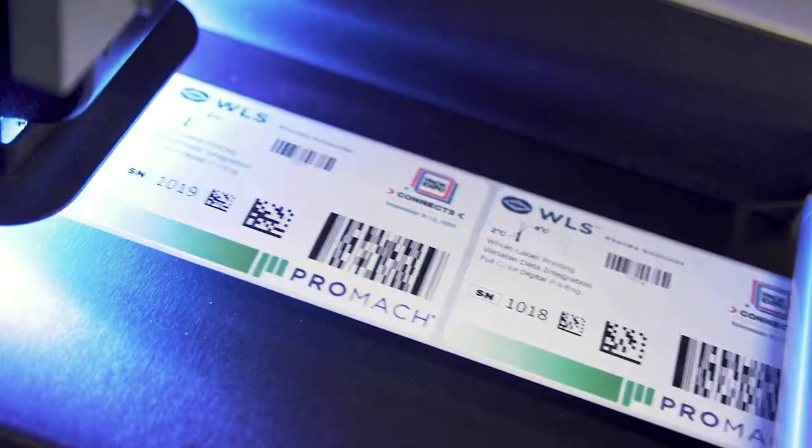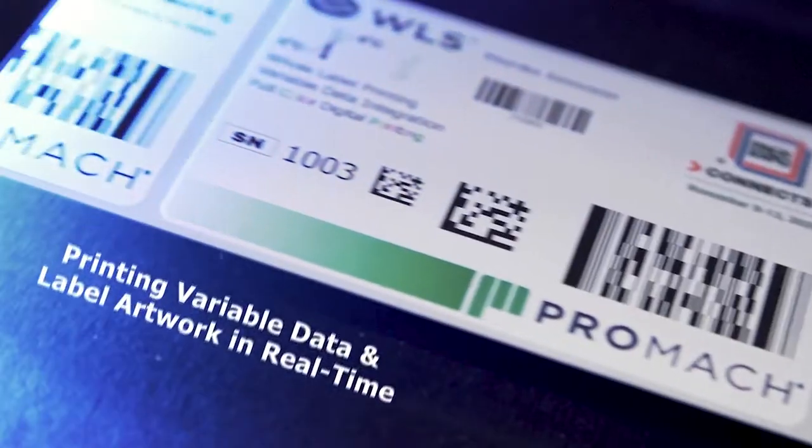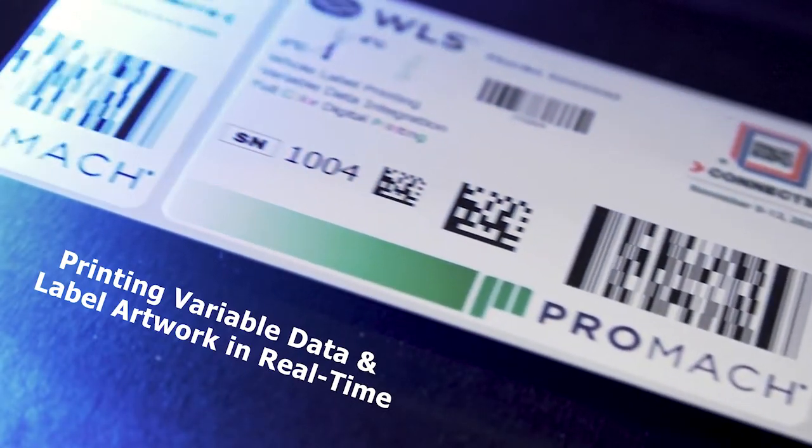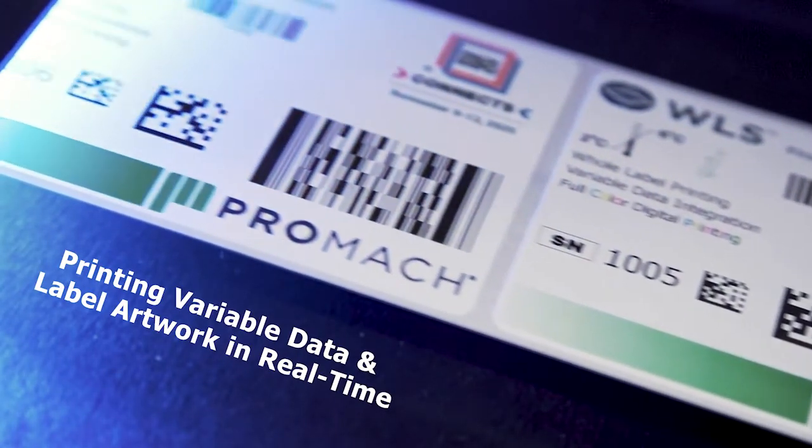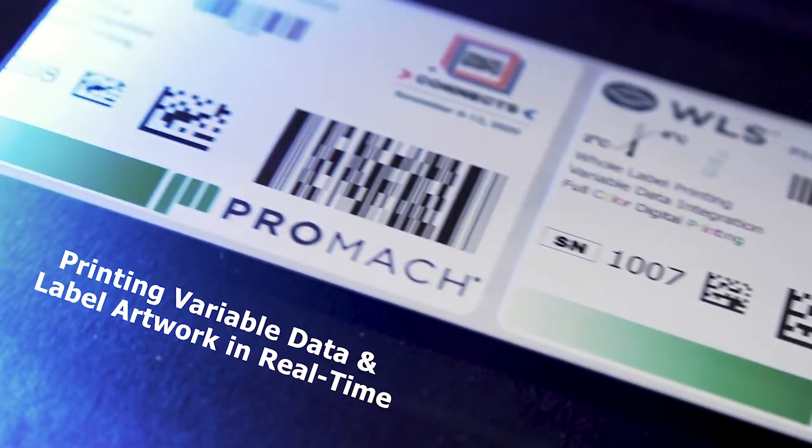The variable data can include your lot code, date codes, serial number, linear barcodes, 2D data matrices, PDF 417 codes, stacked codes, and any type of commonly used text or code.